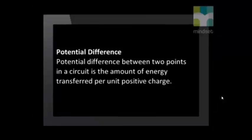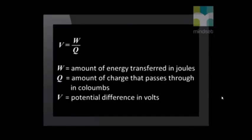Current would not flow unless there is a potential difference between two points on the circuit. The concept of potential difference deals with how much energy is being transferred per unit charge as the charge moves around the circuit. As the unit charge passes through the circuit, it is doing work — energy is being transferred. The potential difference between two points in a circuit is the amount of energy transferred per unit positive charge. V equals W over Q, where W is the amount of energy transferred measured in joules, Q is the amount of charge measured in coulombs, and V is the potential difference measured in volts.